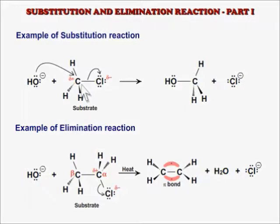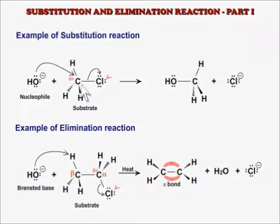In that case, the reagent acts as a nucleophile. Alternatively, the reagent may behave as a Brønsted base and attack a hydrogen bonded to a carbon called the beta carbon, which is directly bonded to the carbon of the carbon-halogen bond, called the alpha carbon.